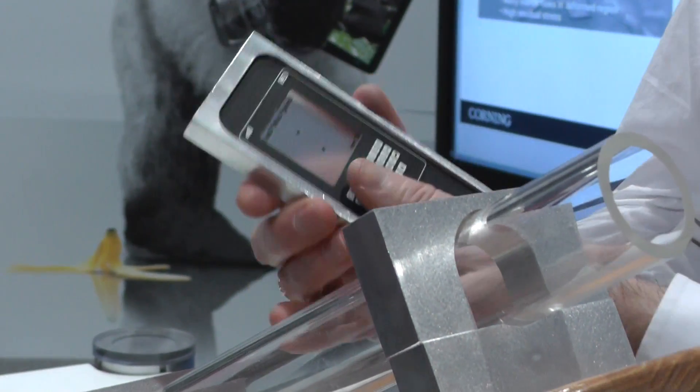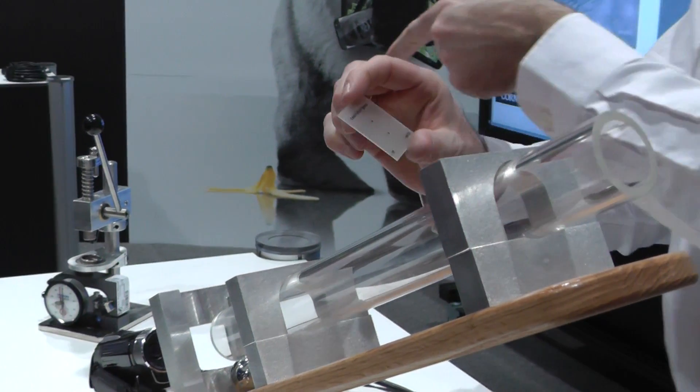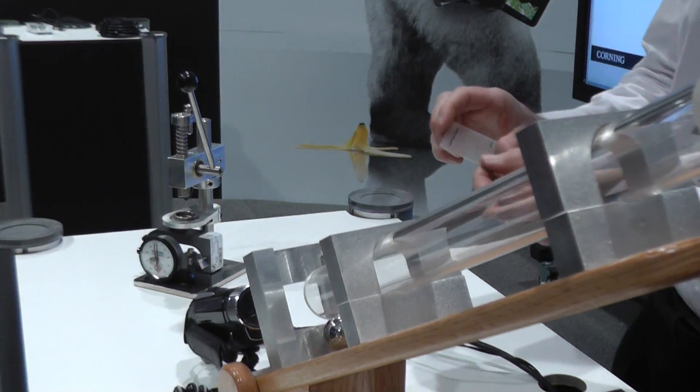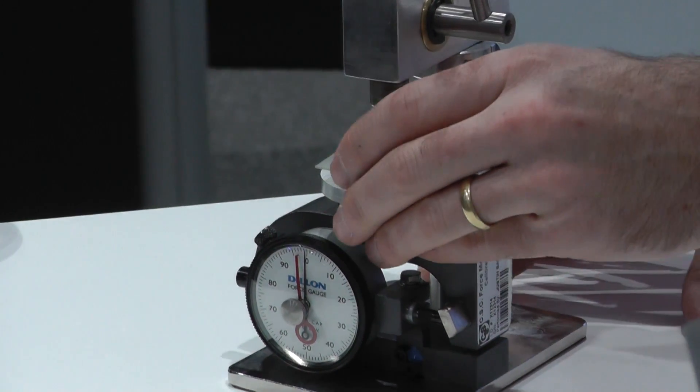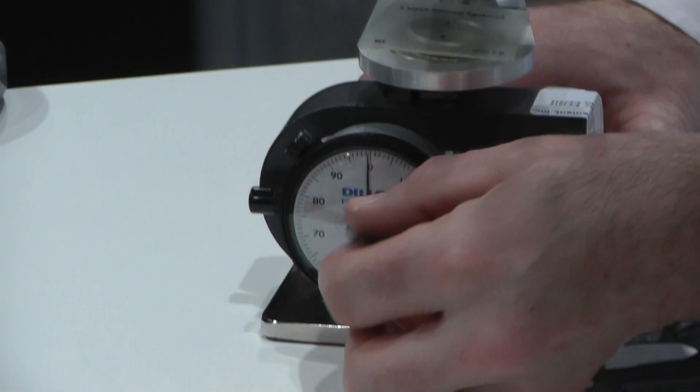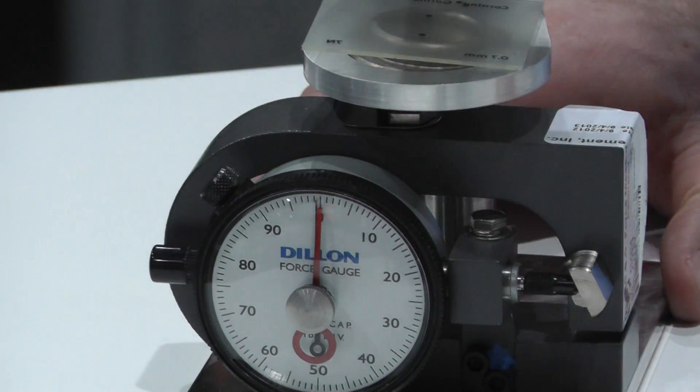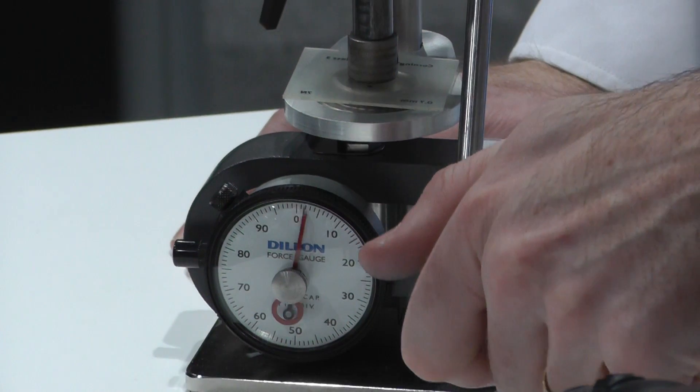To demonstrate the added retained strength of Gorilla Glass 3, we're going to take this glass sample out of the holder and bring it over to this lever press. Remember, this sample has been scratched with a diamond indenter at 0.7 Newtons. I want you to watch this dial—it's reading force in pounds. We're going to load this up.